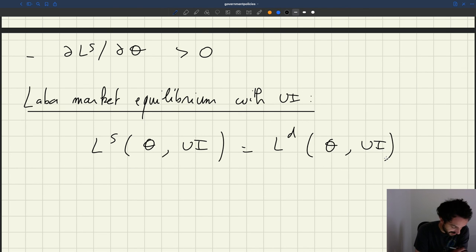But nevertheless, once UI is fixed, then you have one equation. And here we have one unknown variable, which is theta. And so theta, the labor market tightness, will be determined in equilibrium by the equality between supply and demand.